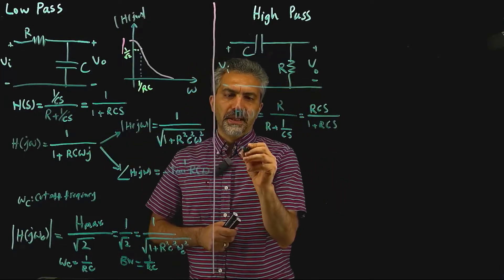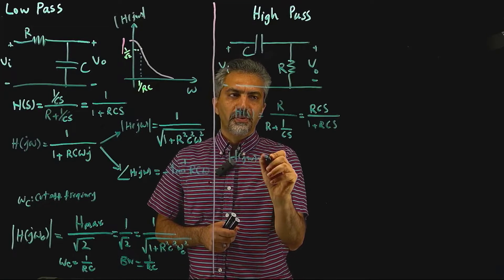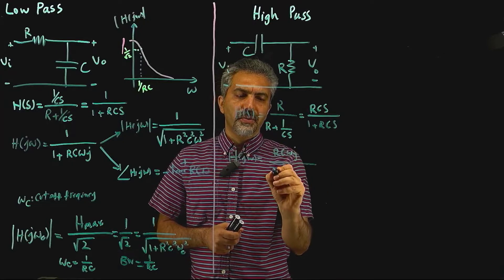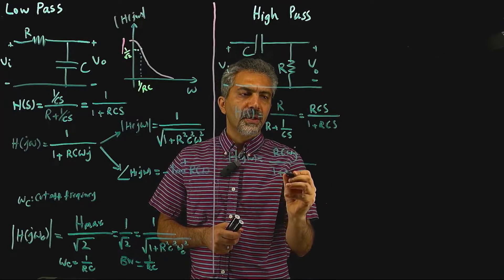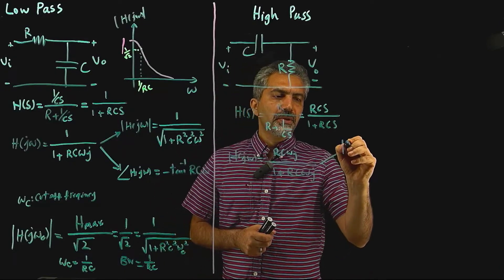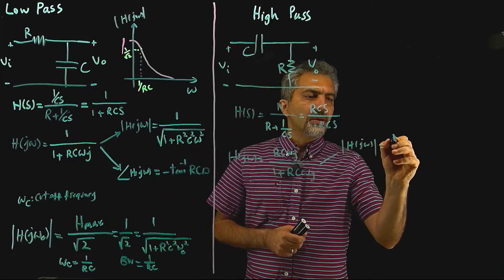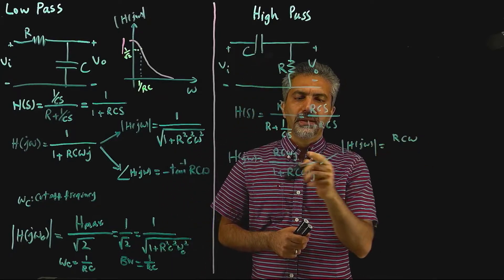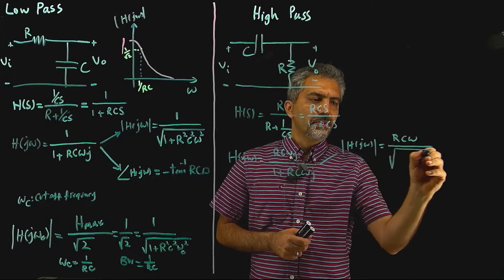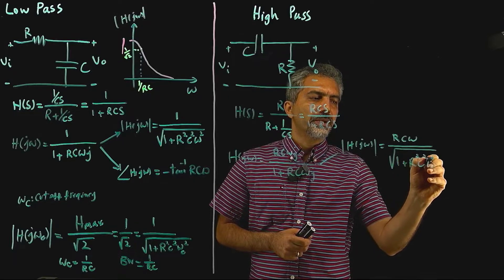Replacing s with jω, H(jω) = RCωj divided by 1 plus RCωj. If you look at the magnitude of H(jω), that would be RCω in the numerator divided by the square root of 1 plus R²C²ω².